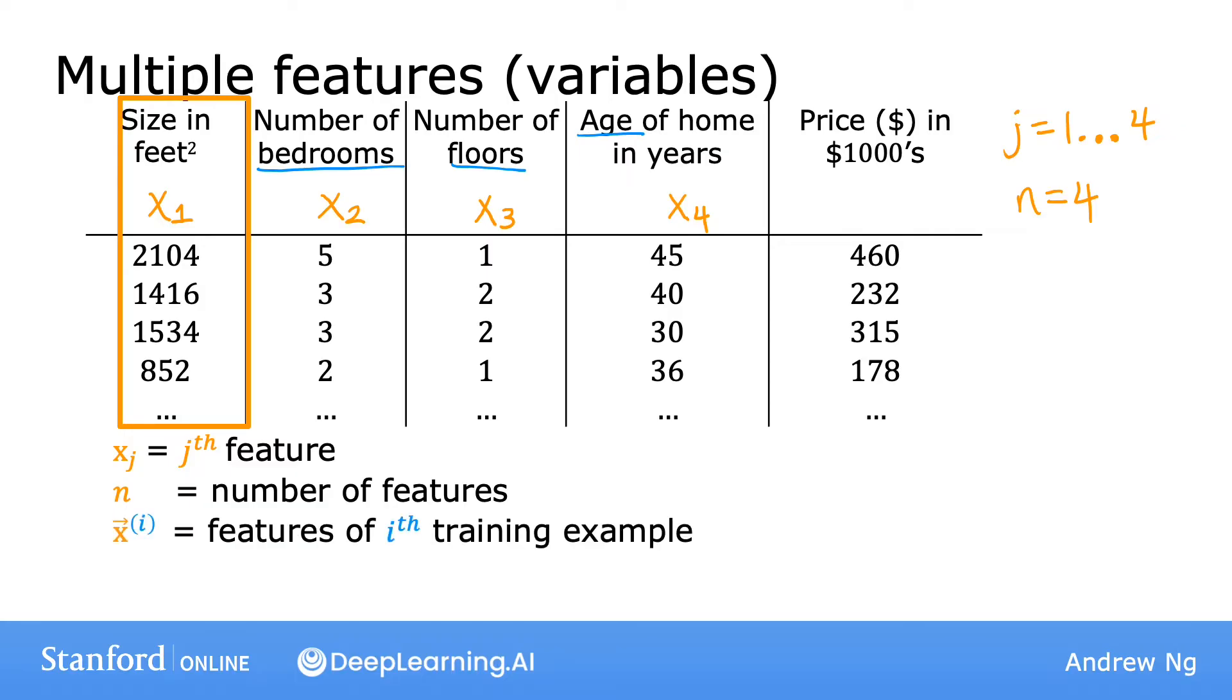As before, we'll use x superscript i to denote the i'th training example. So here, x superscript i is actually going to be a list of four numbers, or sometimes we'll call this a vector that includes all the features of the i'th training example. So as a concrete example, x superscript in parentheses 2 will be a vector of the features for the second training example. So it will equal to this 1416, 3, 2, and 40. And technically, I'm writing these numbers in a row. So sometimes this is called a row vector rather than a column vector. But if you don't know what the difference is, don't worry about it. It's not that important for this purpose.